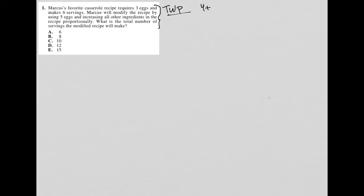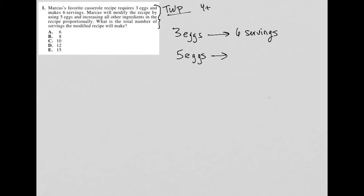This first sentence tells us that three eggs leads to six servings. That's the translation of sentence one. The next sentence says Marcus will modify the recipe by using five eggs and increasing all other ingredients in the recipe proportionally. So now he's not going to use three eggs — he's going to use five eggs. The question asks: what is the total number of servings the modified recipe will make?